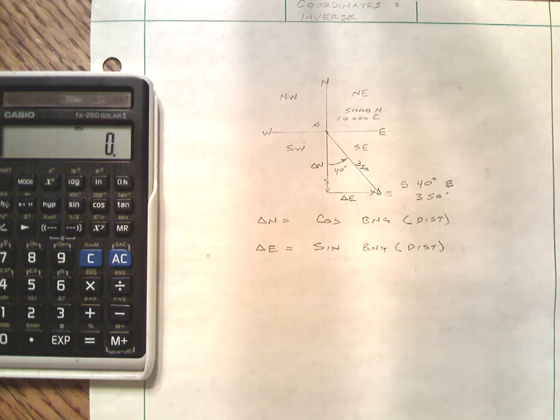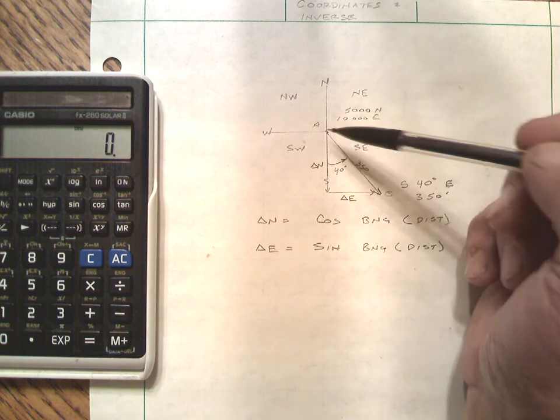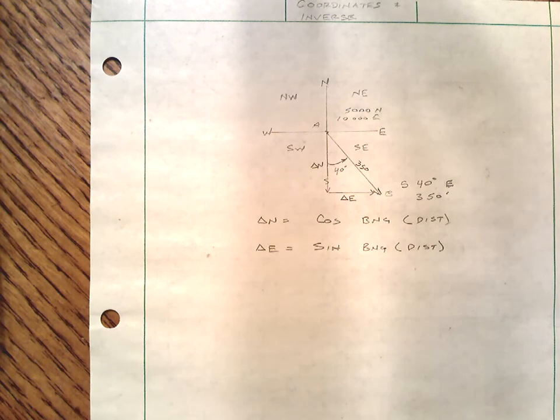Hello. This mini lecture is about coordinates: inversing, finding coordinates from a known point, or inversing finding the bearing and the distance between two given coordinates.